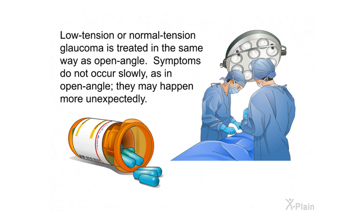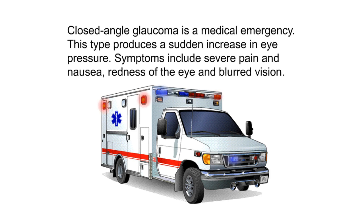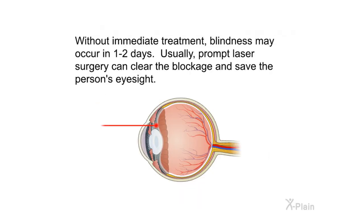Low tension or normal tension glaucoma is treated in the same way as open-angle glaucoma. Closed-angle glaucoma is a medical emergency — this type produces a sudden increase in eye pressure. Symptoms include severe pain, nausea, redness of the eye, and blurred vision. Without immediate treatment, blindness may occur in one to two days. Usually prompt laser surgery can clear the blockage and save the person's eyesight.